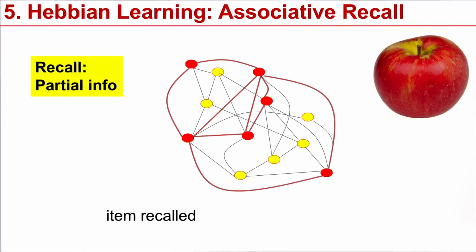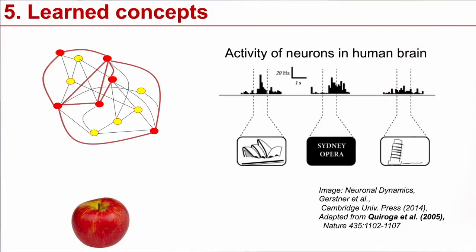Despite the partial information, you can retrieve the full information: the picture of an apple, the smell of an apple, the odor of an apple. These strongly connected neurons that represent the concept of an apple in their connections are also called an assembly, an assembly that will represent the apple concept.